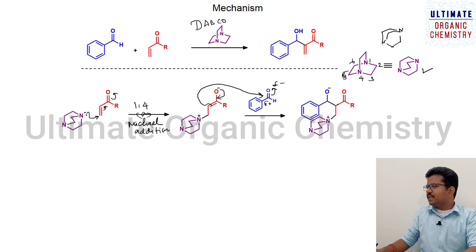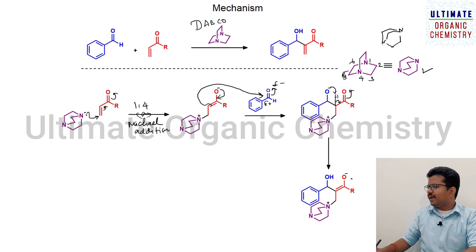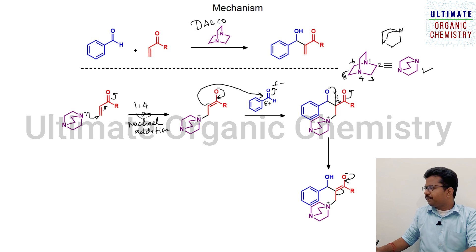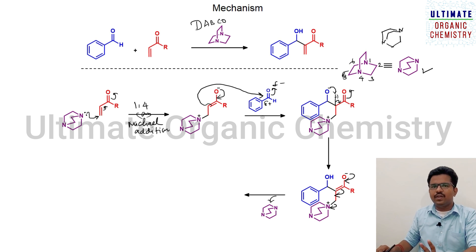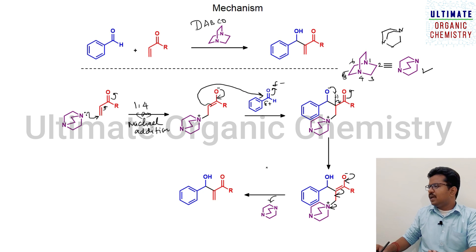This leads to the formation of an intermediate. Now the oxygen has to become neutral, so it abstracts a hydrogen atom; the electrons move toward the carbon atom and then toward the oxygen, forming an enolate-type intermediate. When the electrons come back, the pi electrons move toward the carbon and nitrogen takes the electrons back, regenerating DABCO which can be utilized for the next catalytic cycle. The catalyst is regenerated during the course of the reaction, leading to the final product.